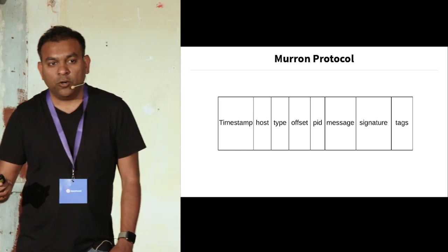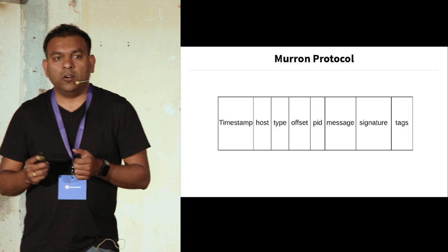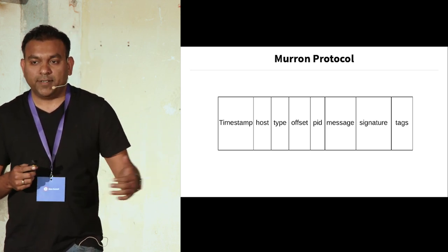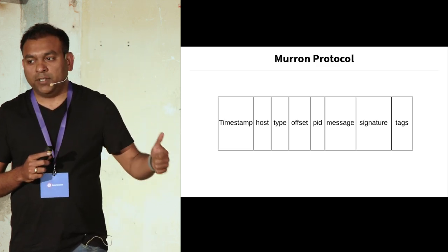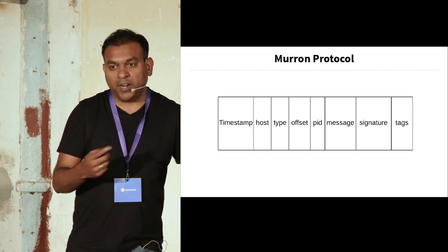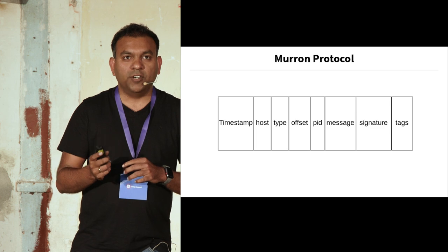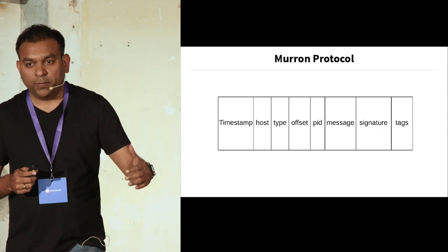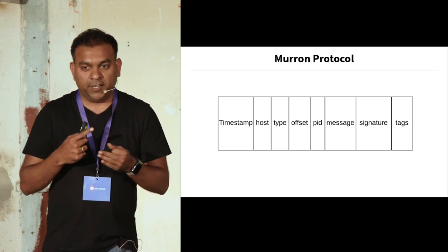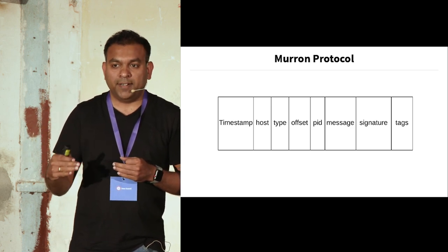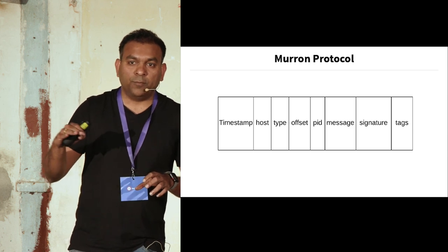Message is the actual payload — it could be an Apache access log or any business metrics. And there is a signature field. Slack uses logs to power billing stats and metrics that get reported to Wall Street, so we want to make sure no system in the middle can tamper with business metrics. We implemented the signature feature to provide this security. Finally, there are tags — a key-value pair. Some applications running on Kubernetes, for example, want to add metadata like what container image they're running or the container version. These infrastructure metadata details can be added alongside the payload and may be useful for downstream consumers.